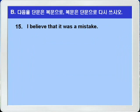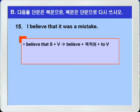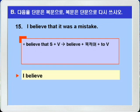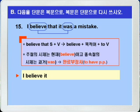15번. 'I believe that it was a mistake.' 나는 그것이 실수였다고 생각한다. 이 문장은 'believe + 목적어 + to 부정사' 형식으로 바꾸면 됩니다. 주절의 시제는 believe로 현재이고, 종속절의 시제는 was로 과거니까, 종속절의 시제가 주절보다 앞섭니다. 따라서 완료부정사를 써야겠죠. 정답: 'I believe it to have been a mistake.' 나는 그것이 실수였다고 생각한다.